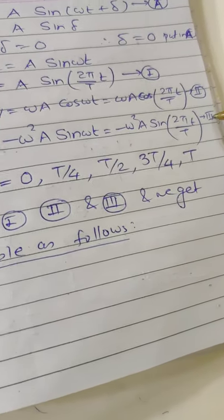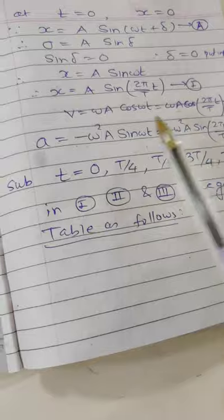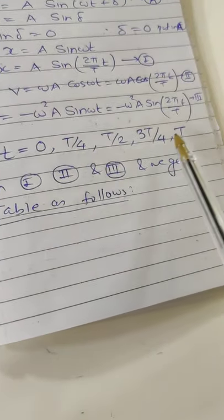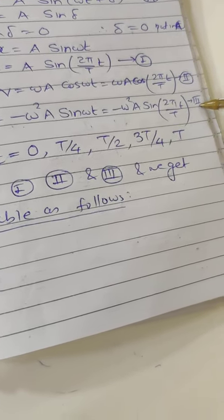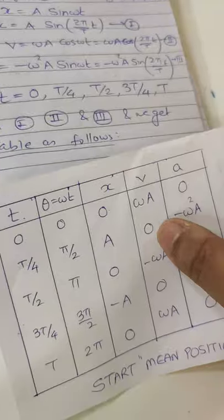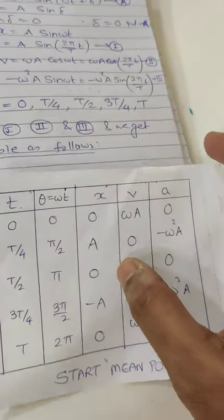What you have to do is just put t equal to 0, T/4, T/2, 3T/4, T in equations 1, 2, and 3. And then we get a table like this.